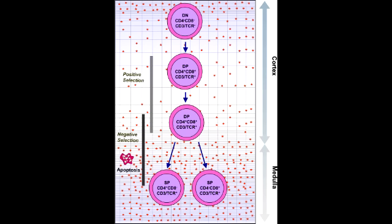If it is able to interact with MHC, it depends on which MHC. If it's able to interact with MHC class 1, the cell becomes CD8 T-cell or cytotoxic T-cell. If it's able to interact with MHC class 2, it becomes CD4 T-cell, also known as helper T-cell. That summarizes positive selection.